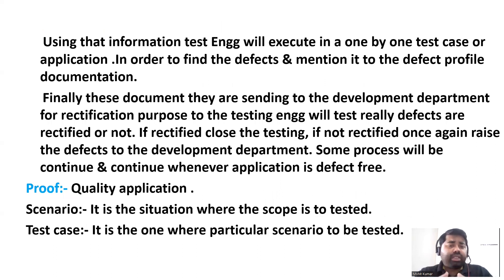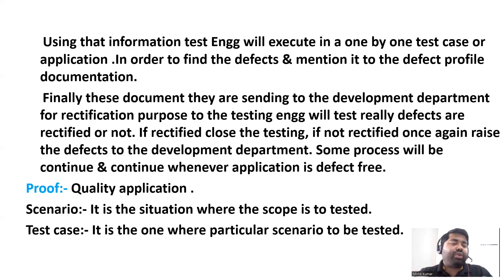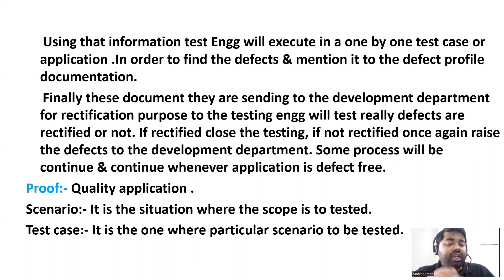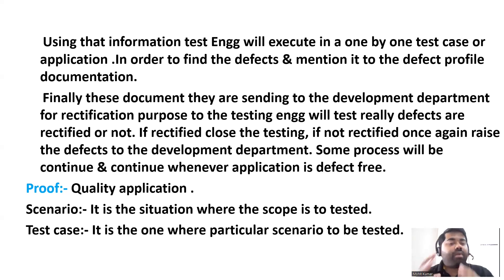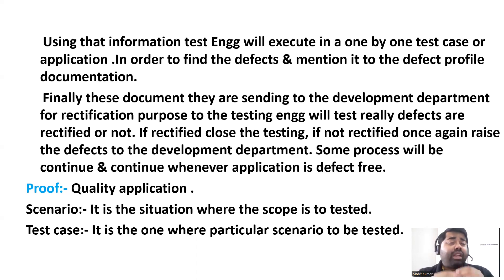Using this information, the test engineer executes test cases one by one on the application to find defects, and records them in the defect profile document. These documents are sent to the development department for rectification. The test engineer then verifies whether the defects are fixed. If rectified, testing is closed; if not, the defect is raised again. This process continues until the application is defect-free.